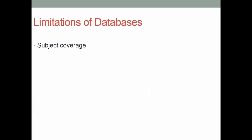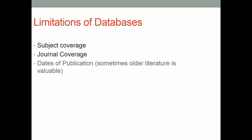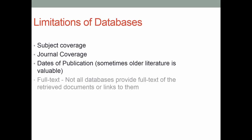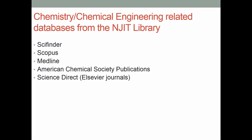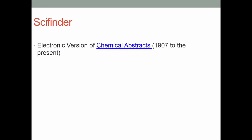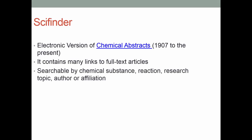Limitations of databases: no database covers everything in terms of subject and journal coverage, and the dates vary as well. In general, the more recent the information is, the more likely it is available in electronic format. SciFinder is the electronic version of Chemical Abstracts, which goes back to 1907 to the present — even that older information was digitized. It contains links to the full text of articles, and you can search on chemical substance, reaction, research topic, author, or affiliation.